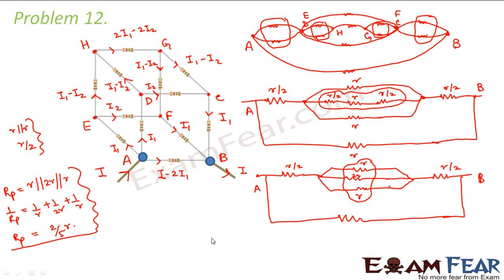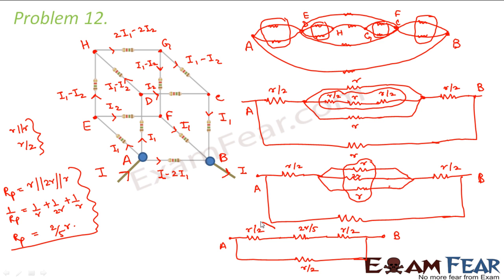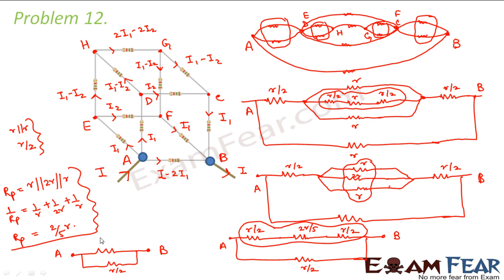We replace those three resistors with 2R/5. The circuit now has R/2, then 2R/5, then R/2 in series, giving R/2 + 2R/5 + R/2 = 7R/5. This 7R/5 is in parallel with the direct resistor R/2. So R_equivalent = parallel combination of 7R/5 and R/2, which comes out to be 7R/12. This is the equivalent resistance of the circuit.